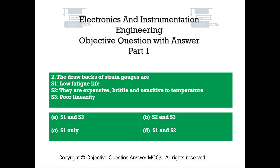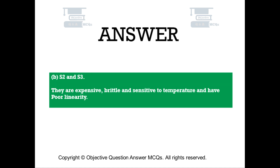Question number 2. The drawbacks of strain gauges are: S1 — Low fatigue life. S2 — They are expensive, brittle, and sensitive to temperature. S3 — Poor linearity. Option A: S1 and S3. Option B: S2 and S3. Option C: S1 only. Option D: S1 and S2. The right answer is Option B — S2 and S3. The drawbacks of strain gauges are that they are expensive, brittle, sensitive to temperature, and have poor linearity.